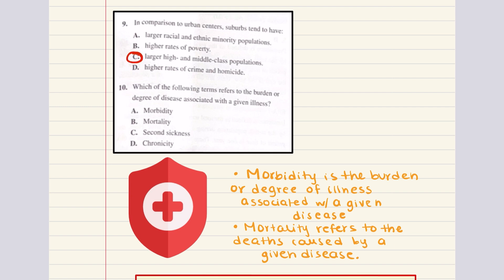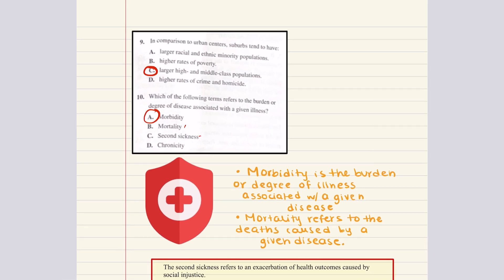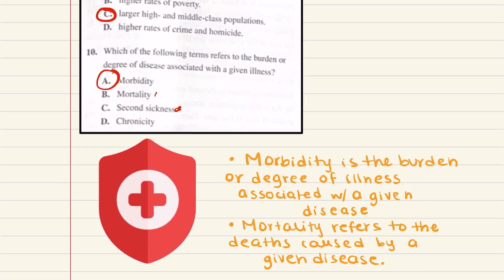Problem ten asks: which of the following terms refers to the burden or degree of disease associated with a given illness? The answer is morbidity — this refers to the burden of illness or the severity or degree of illness. The correct answer is A. As a refresher: mortality refers to deaths caused by a given illness; sickness is a term used to describe the exacerbation of health outcomes due to social injustice; and chronic illnesses refers to the duration of a disease, not its severity.